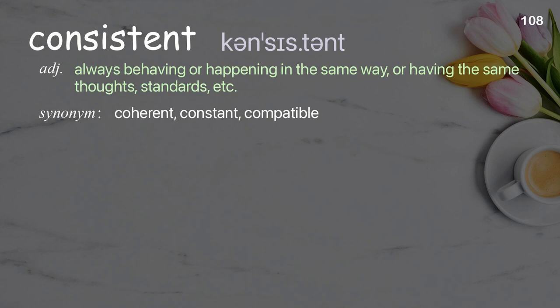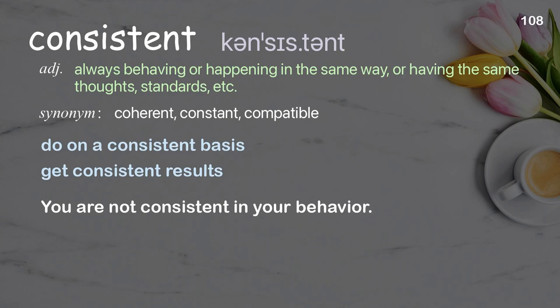Consistent: always behaving or happening in the same way, or having the same thoughts, standards, etc. Examples: do on a consistent basis, get consistent results. You are not consistent in your behavior.